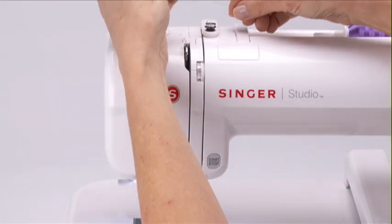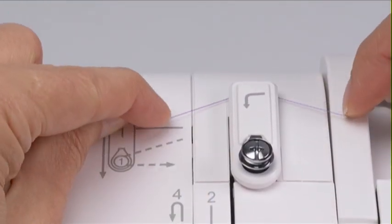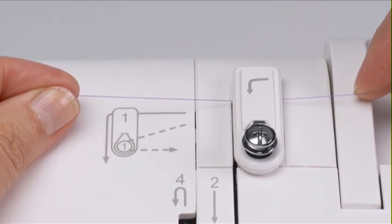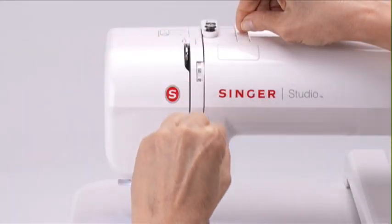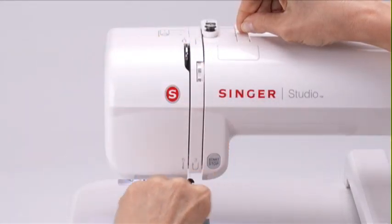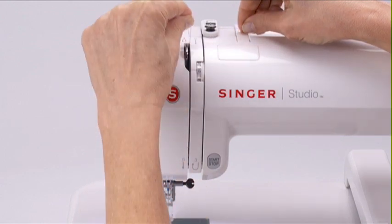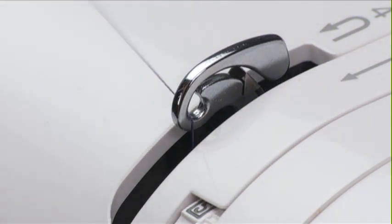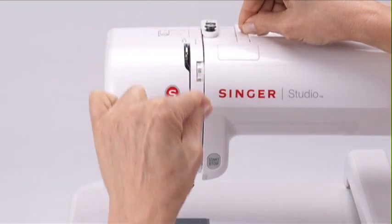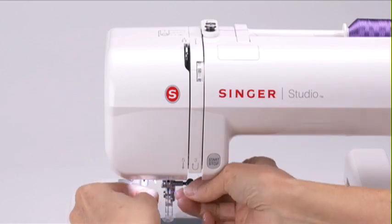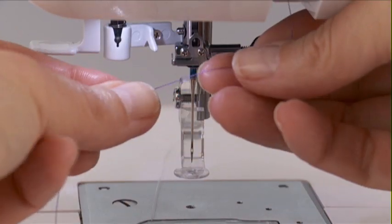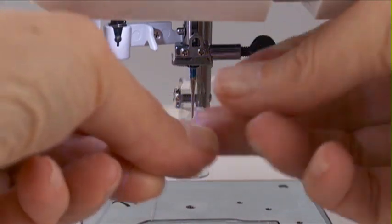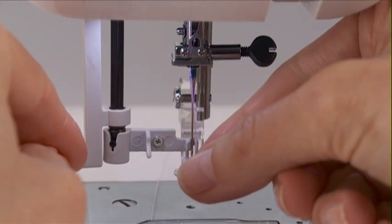Hold the thread and pass it under the thread guide. Draw the thread toward you along the channel. Pull the thread up around the guide plate and along the left channel. Slip the thread into the eye of the take-up lever and pull it down along the left channel. Pass the thread through the thread guide on the needle clamp. Push the needle threader lever down as far as it will go.